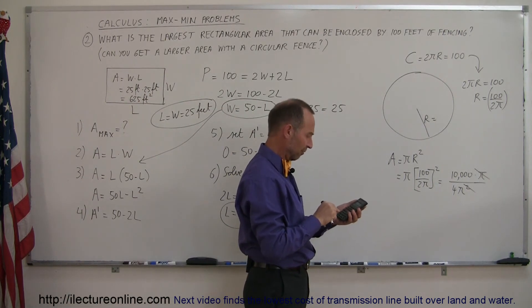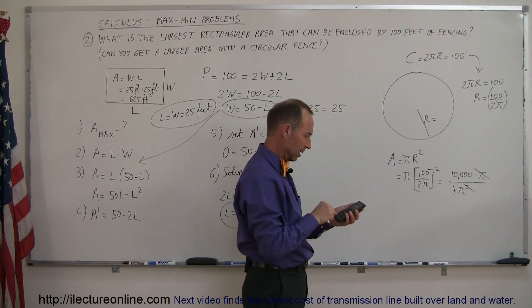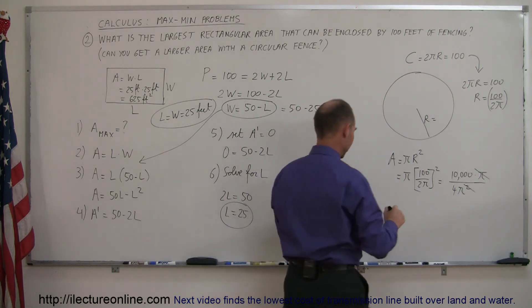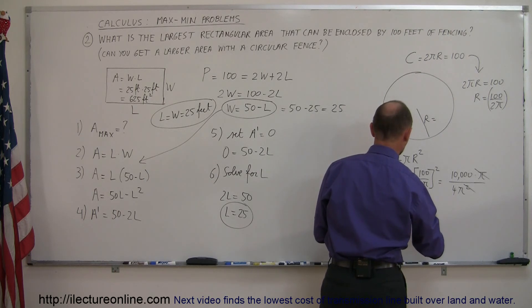we would end up with a 625 square foot area, and let's find out how big this is. So 10,000 divided by 4 divided by pi, and guess what?